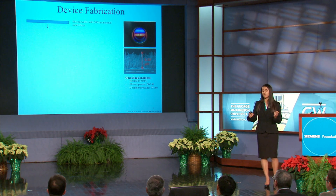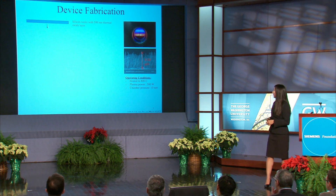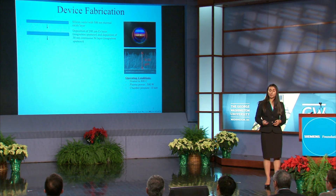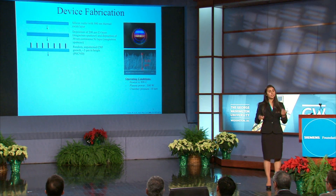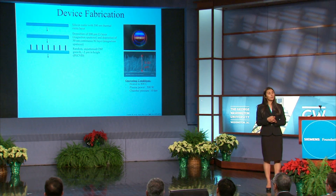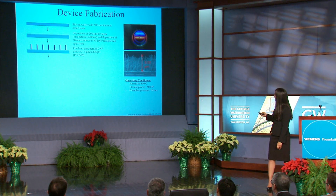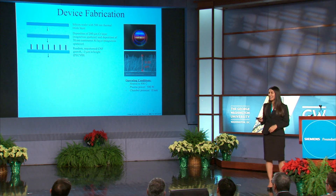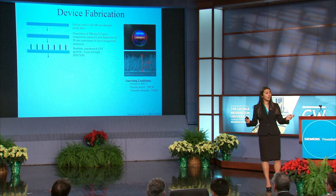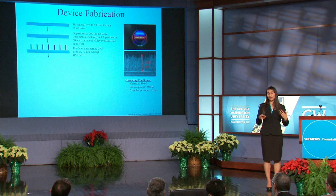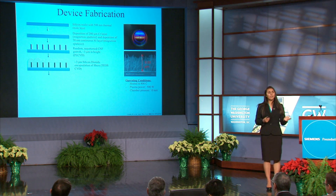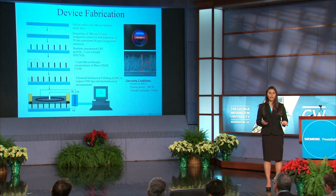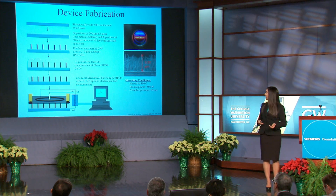The device fabrication process is long and multi-step. I used a silicon wafer as a platform, then deposited nickel and chromium, then grew the carbon nanofibers with PECVD — this is actually the PECVD chamber right here, which I affectionately call 'black magic.' This glow right here is the plasma being shot into the chamber, growing the carbon nanofibers. After fabrication, the fibers were encapsulated in silicon dioxide and then polished chemically and mechanically for future active site binding.